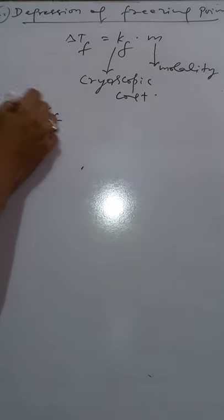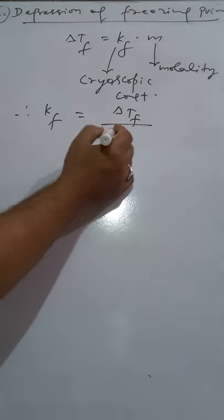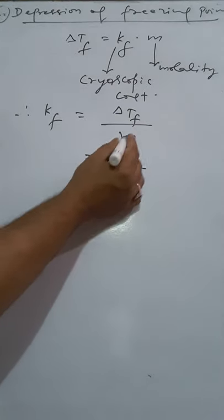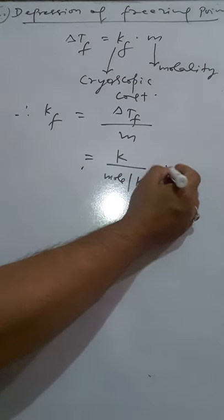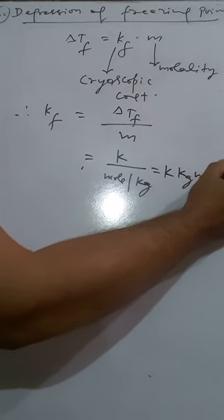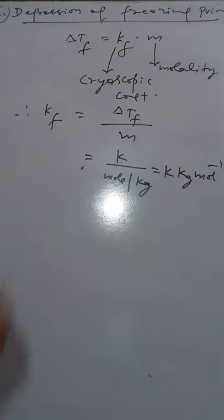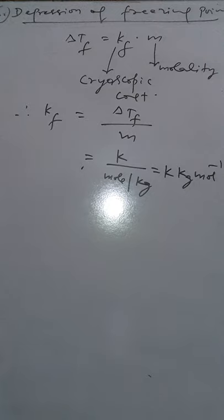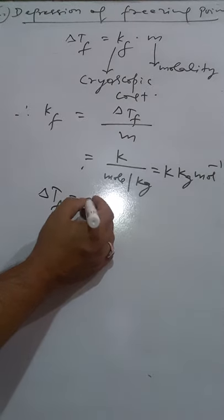Now we can determine the unit of KF. KF is equal to delta Tf divided by molality. The unit of temperature is Kelvin and molality is mol per kg. So the unit of KF is equal to Kelvin kg per mol. This is the unit of KF. KF is the depression of freezing point constant or cryoscopic constant, and delta Tf is the depression of freezing point.